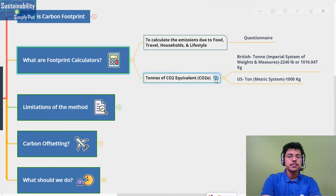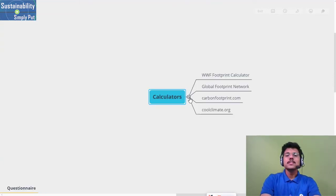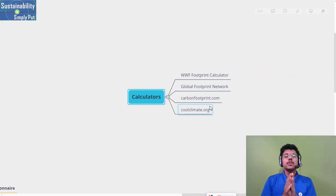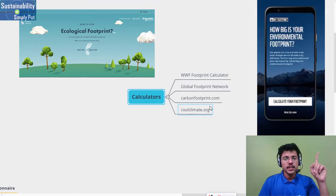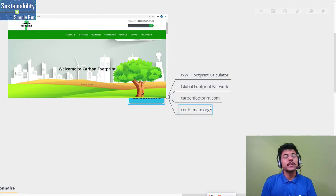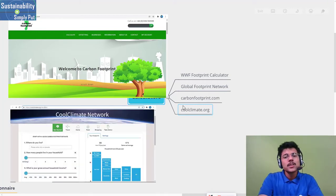Let's see some examples of footprint calculators. These are the calculators: WWF (World Wildlife Fund for Nature), Global Footprint Network - we have already discussed these two calculators in detail in our previous videos, so you can watch them. The link is given in the description and at the top. There are some other calculators as well like carbonfootprint.com and coolclimate.org. You can see there are multiple options, and I have also given them in the description.